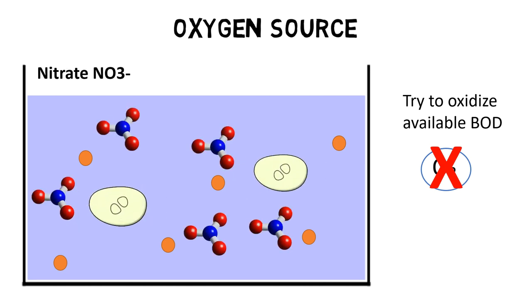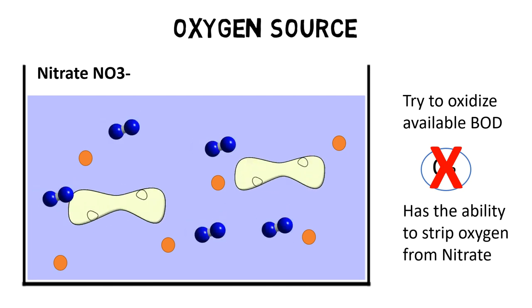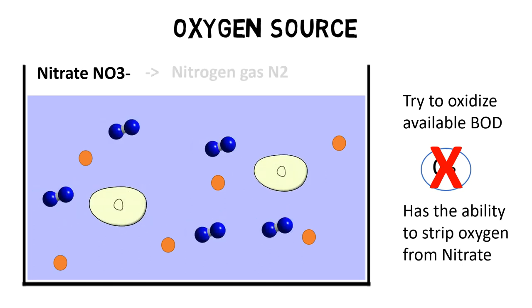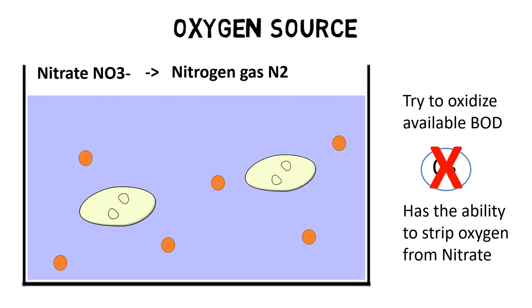Heterotrophic bacteria has the ability to strip the oxygen from nitrate NO3- and to convert nitrate to nitrogen gas N2. The nitrogen gas floats then as bubbles to the water surface and into the atmosphere.